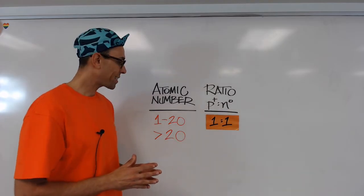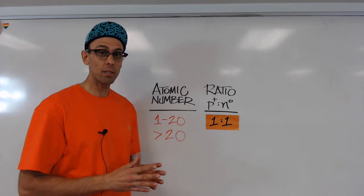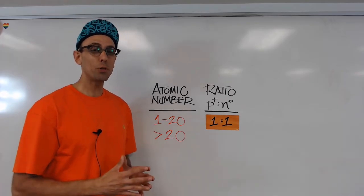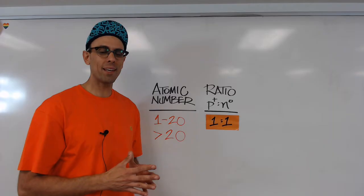So if let's say an atom has 10 protons, it should have about 10 neutrons, and that would result in a nucleus that's stable.